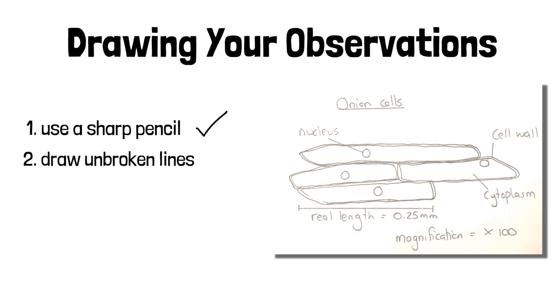Second thing is the lines need to be unbroken. So no shading or anything like that. They just need to draw the outline of whatever it is they see. We can see that they've done that. The next thing they're supposed to do is to label the important features. And if we look closely at the diagram, we can see the cell wall, the cytoplasm, the nucleus, all those clear things are on there.